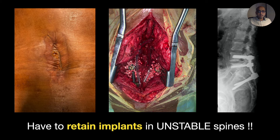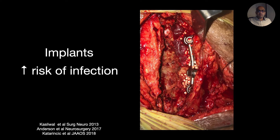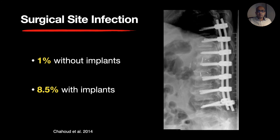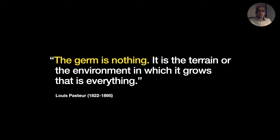Spine is unique in this aspect — you cannot use an external fixator like you can do for tibial osteomyelitis. Primary surgeries with implants anyway have a higher risk for surgical site infection. Some have reported that with instrumentation, the risk of infection increases up to 28-fold. And among many other factors, one of the main reasons for this is the predilection of bacteria to colonize the surface of metals.